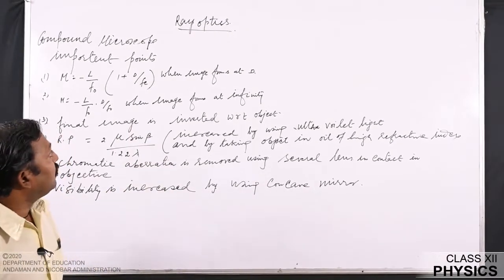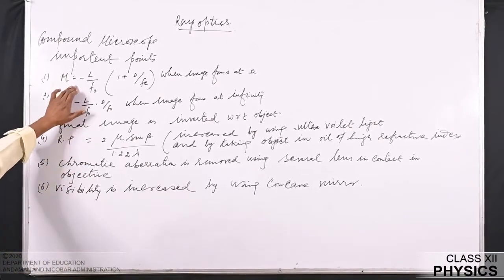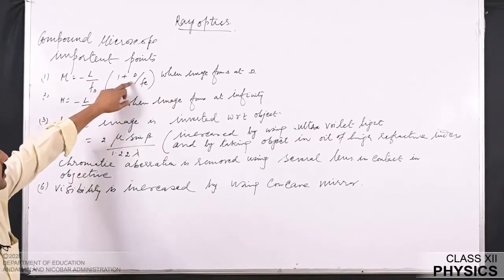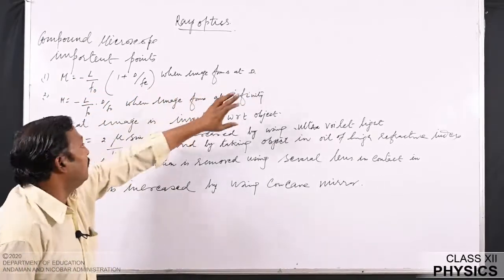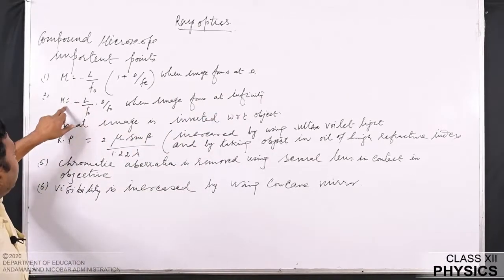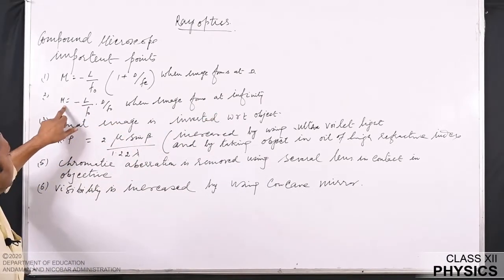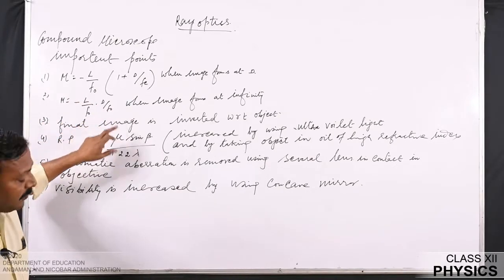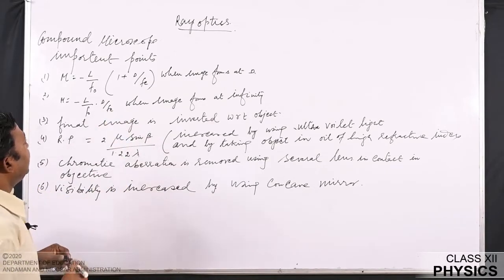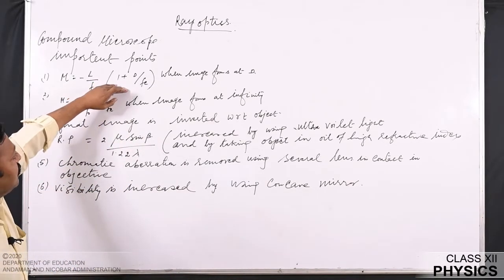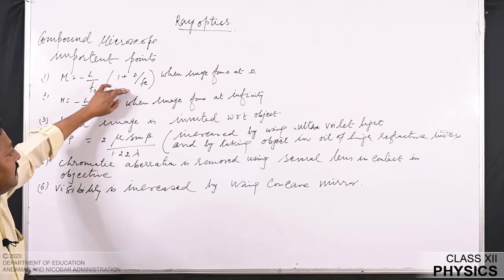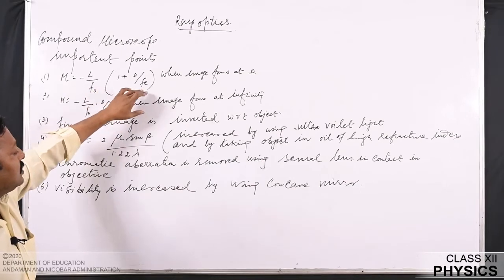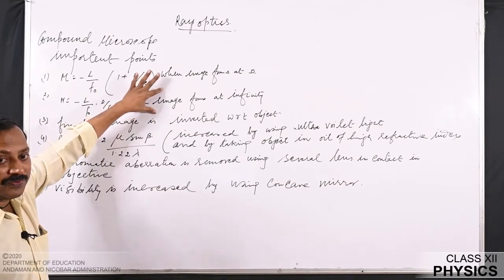Here are several important points related to compound microscope. First, the magnification produced in a compound microscope is given by M = −L/F₀ × (1 + D/Fₑ) when the image forms at the distance of distinct vision. In the second case, when the image forms at infinity, the magnification is given by M = −L/F₀ × D/Fₑ. In both cases, the magnification when the image forms at the distance of distinct vision is slightly more than when the image forms at infinity.